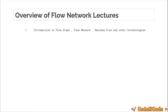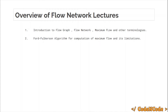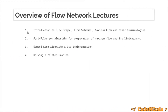This is the basic overview of what we are going to study: first, an introduction to various terminologies like flow graph, flow network, minimum flow, and others. Then we'll study the Ford-Fulkerson algorithm for computation of maximum flow and its limitations, followed by the Edmonds-Karp algorithm and its implementation, and finally solving problems related to network flow. The source and reference for this lecture series will be cpalgorithms.com.